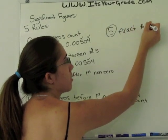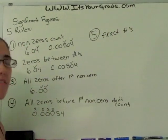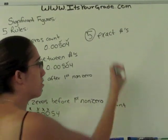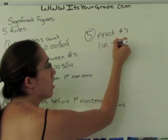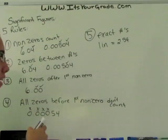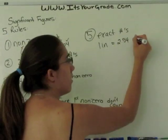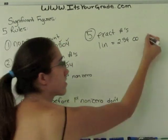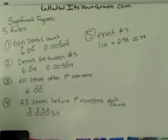The fifth rule has to deal with exact numbers. Exact numbers are numbers that have infinite number of significant figures. For example, if you have 1 inch equals 2.54, this is an exact value. So there is infinite number of sig figs. Those are the five main rules.